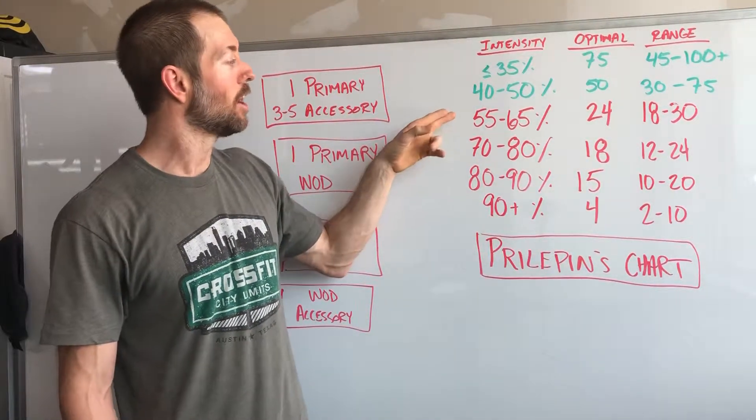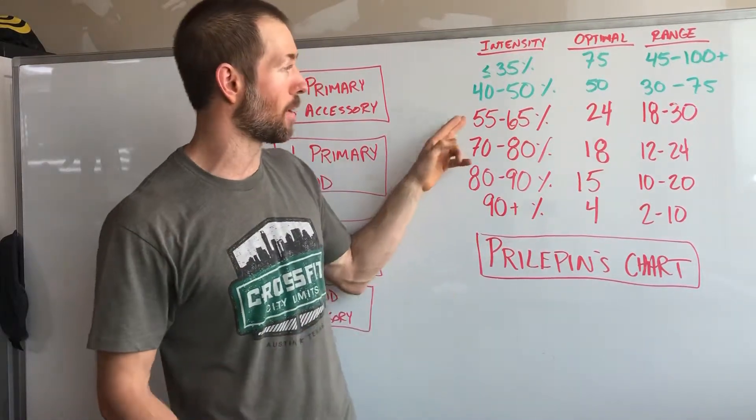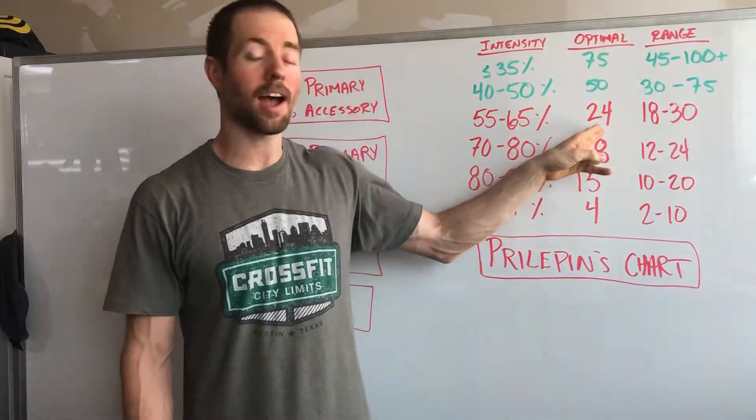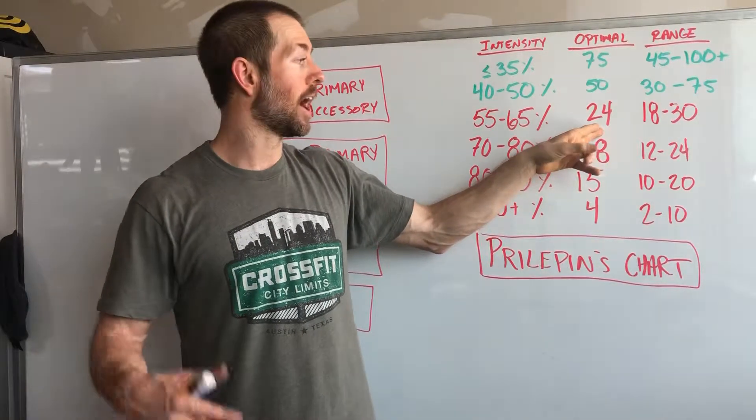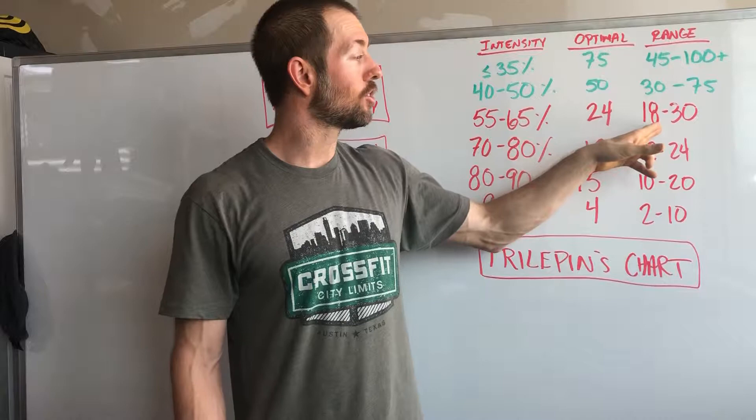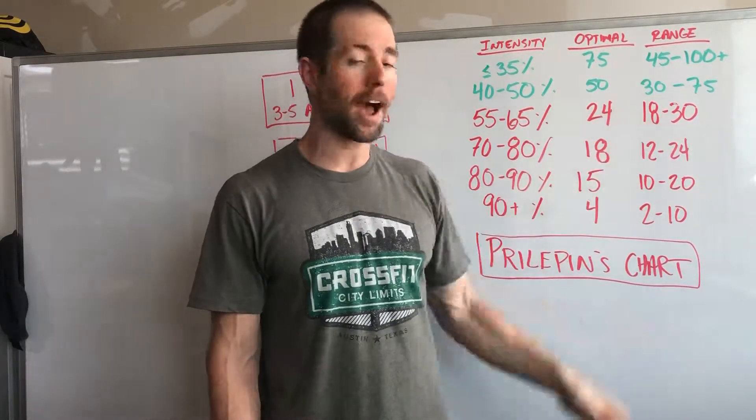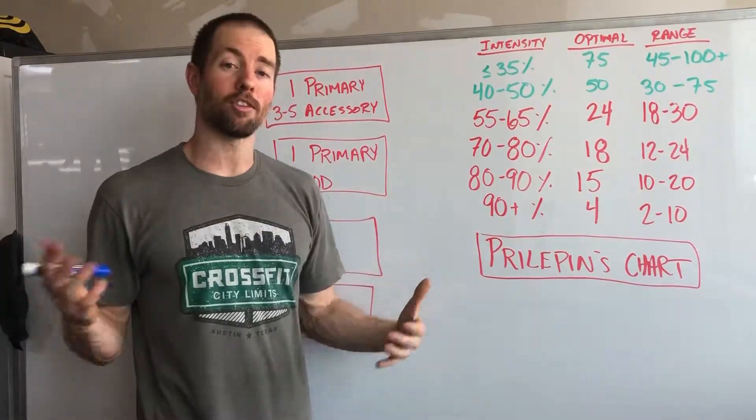So for example, if we just look at when they were lifting between 55 and 65 percent of their max, optimally they got in 24 reps in that intensity range. The total range is they did a minimum of 18 reps and a maximum of 30 reps on average.